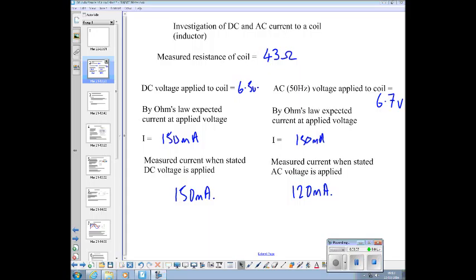To summarize the results, we measured the coil resistance and got 43 ohms. We measured the applied 6.5 volts DC, calculated an expected current of 150 milliamps, and when we turned the circuit on, we got 150 milliamps. But when we applied a similar AC voltage, 6.7 volts, we were expecting from Ohm's law the same 150 milliamps, but actually got 120. The remainder of this session is about explaining why that happens.